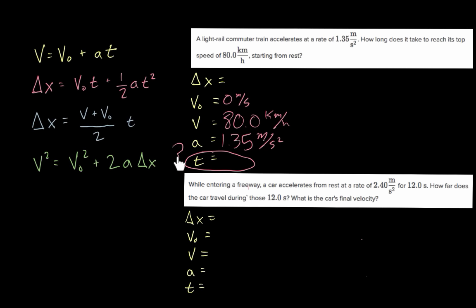We can rule out equations that contain delta x — two of them have delta x, and a third one also has delta x, so we can rule those out. That leaves one equation. It has the final velocity, the initial velocity, the acceleration, and also time — which is what we're looking for. So we've figured out that for this question, we can use that top equation. We would then plug in numbers and solve for t to find the time.